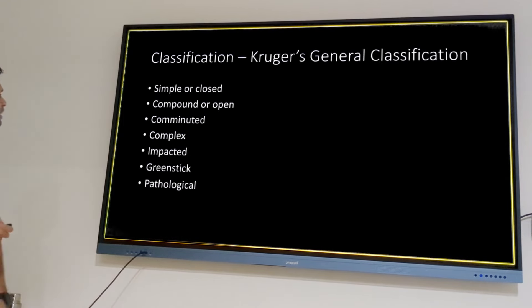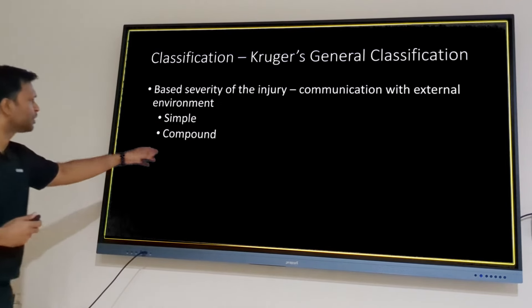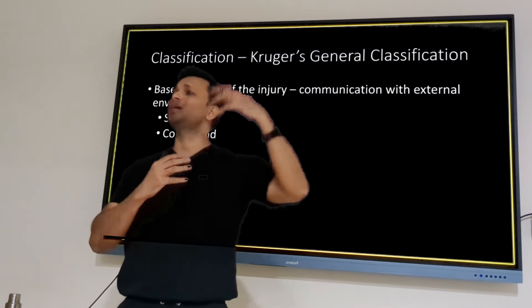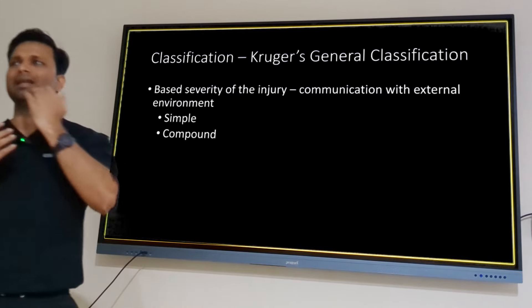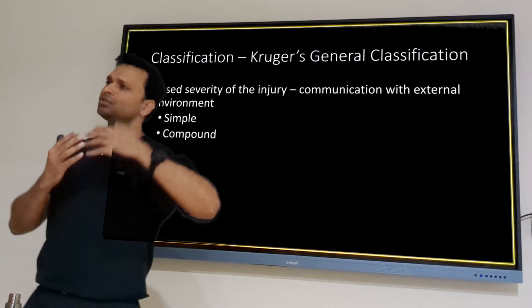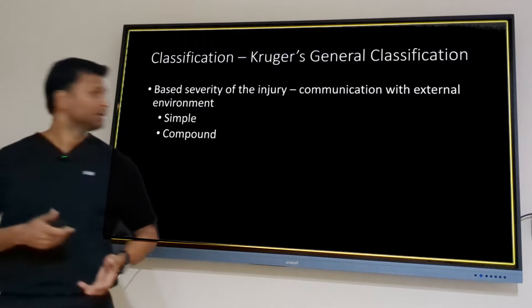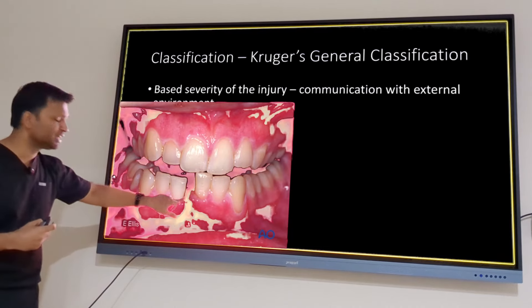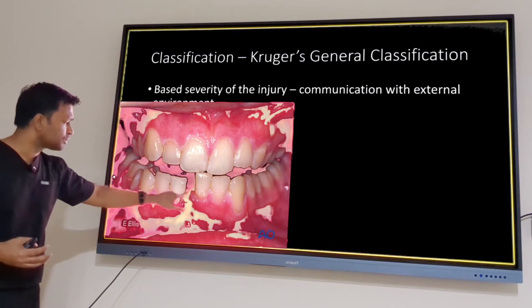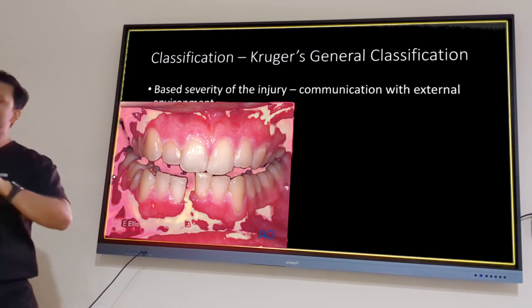The first classification by Kruger is a general one: simple, compound, comminuted, complex, impacted, greenstick, and pathological. Simple means the fracture does not communicate with the external environment; compound means it does — for example, through a laceration visible from outside. In mandible fractures up to the angle region, they are almost always compound fractures because of the presence of the periodontal space communicating with the oral cavity.